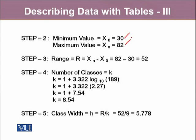The range is the difference of maximum minus minimum, which is 52 in this case. The number of classes K turns out to be 8.54, and approximately we take K to be 9. In step 5, to calculate the class width, we use 9 as K, and it turns out to be 5.78, which can be taken as a class width of 6.